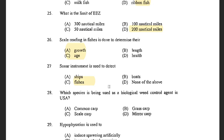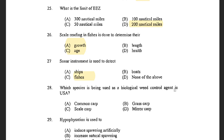Next question: Which species is being used as a biological weed control agent in USA? Options are common carp, grass carp, scale carp, and mirror carp. The answer is grass carp, which is mostly used as a biological weed control agent.